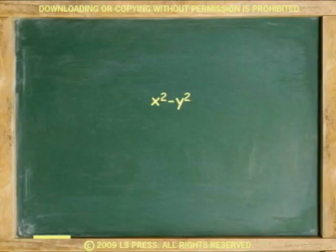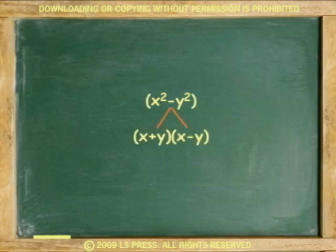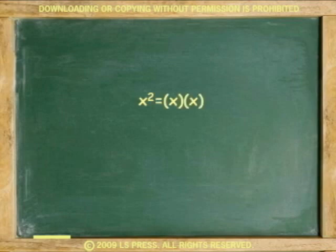A difference of two squares is a binomial that can be factored into two other binomials. Because a square, by definition, is the product of two identical numbers — for instance, 16 is the square of 4 and 9 is the square of 3 — the difference of two squares is two squares with a subtraction sign between them.